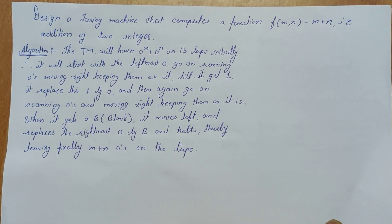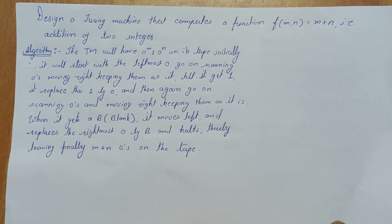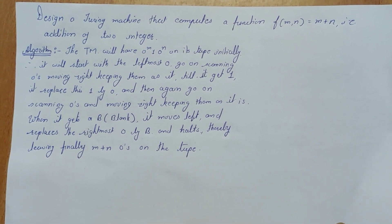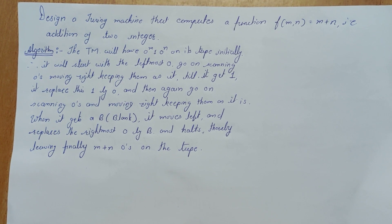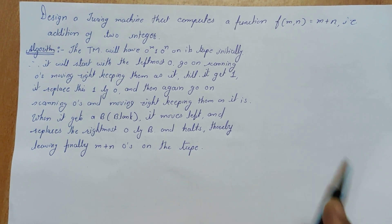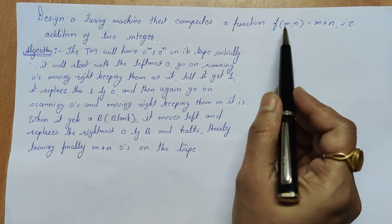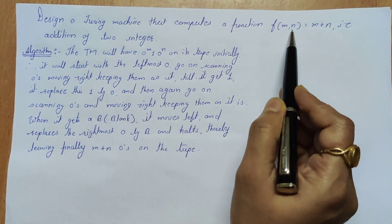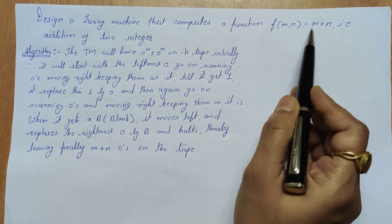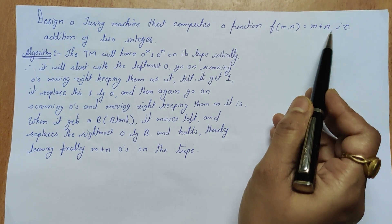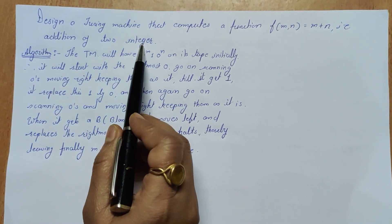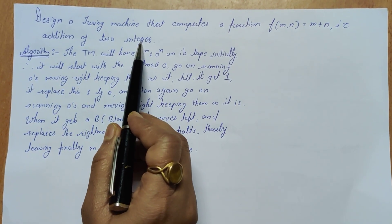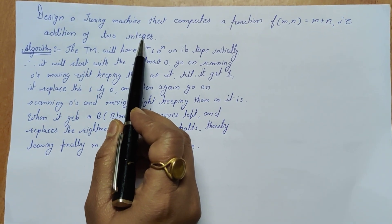Hello friends. In this example of Turing machines, we will design a Turing machine that computes the function f(m, n) = m + n, that is the addition of two integers.